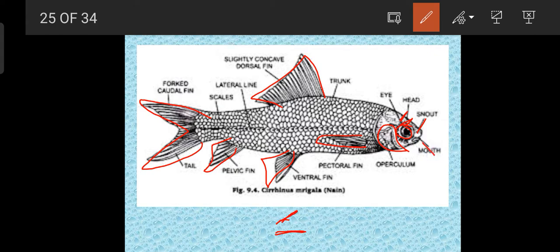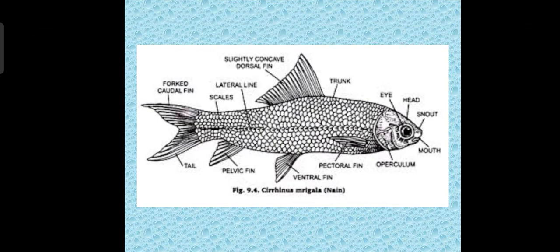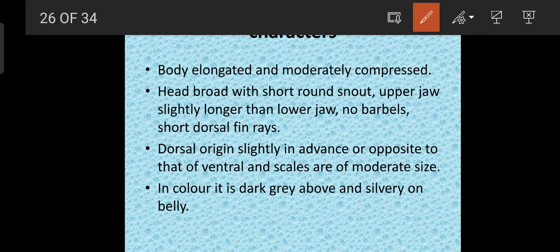The mouth is downward in position, with the upper jaw slightly larger than the lower jaw. This is a bottom feeder, that's why the mouth is in a downward position. The lateral line is also present, which plays a sensory role in this and all fishes. Scales are also present. This covers the parts of the body of this fish.